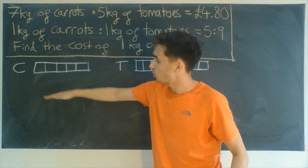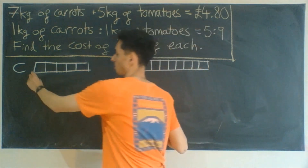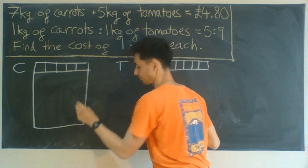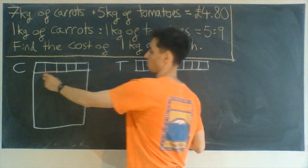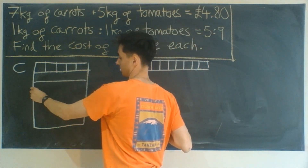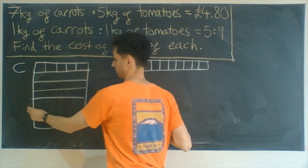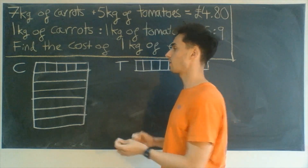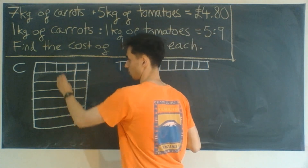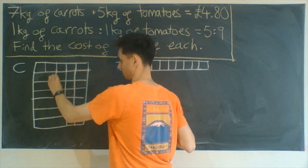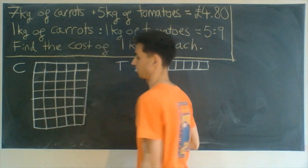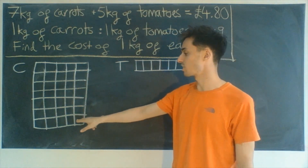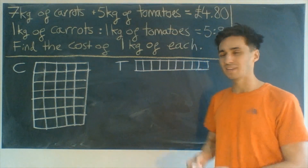We need to add 7 rows, and when we extend our vertical lines down we get 5 columns. If we count all of these up: 5, 10, 15, 20, 25, 30, 35 squares in total.